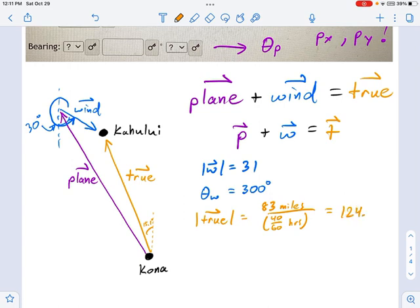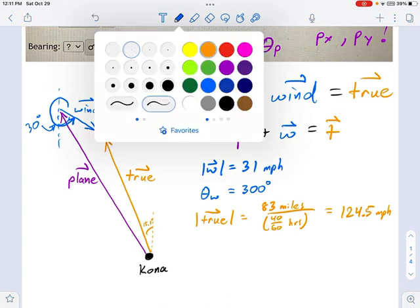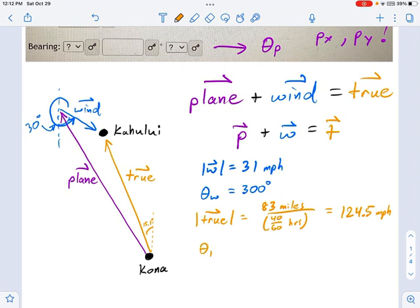I should keep units consistent here. Wind speed is in miles per hour also. Now the direction of that plane heading, the true heading, is actually not too hard to calculate. This is just going to be 90 degrees plus 15.1 degrees. So that's going to be 105.1 degrees.